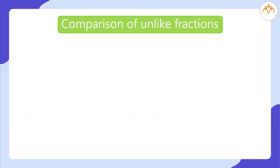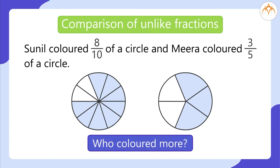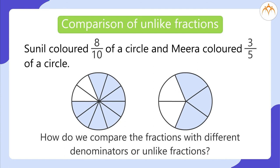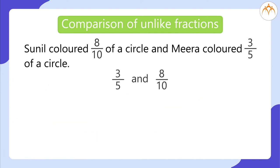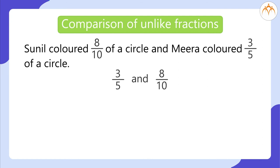Comparison of unlike fractions. Suppose you are given the following unlike fractions. Example: Sunil colored 8 by 10 of a circle and Meera colored 3 by 5 of a circle. Who colored more? How do we compare fractions with different denominators, or unlike fractions? We make the denominators equal — yes, we can change them to like fractions.